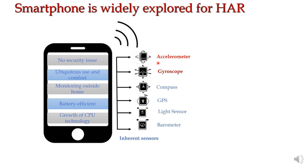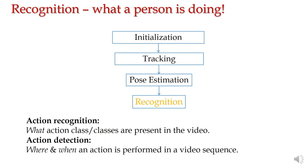Smartphones are very widely used for human activity recognition. They have accelerometers and gyroscopes — accelerometers especially are widely used. Key advantages include no security issues, near-ubiquitous use, comfort and ease of carrying, battery efficiency since we charge daily, and rapidly growing CPU technology in mobile phones. They are also relatively cheap, and cameras have improved enormously.